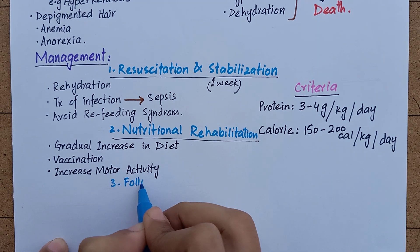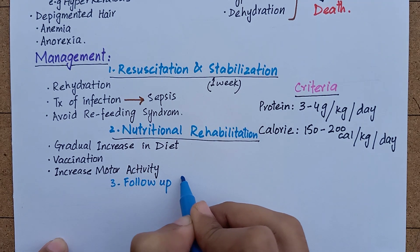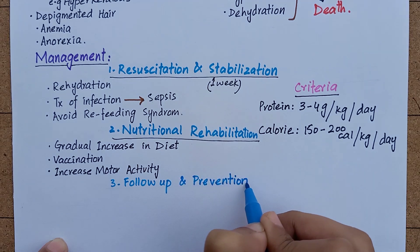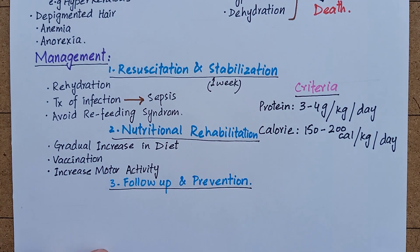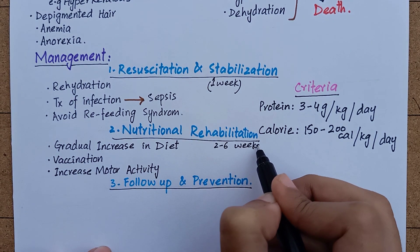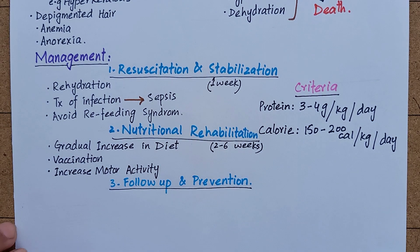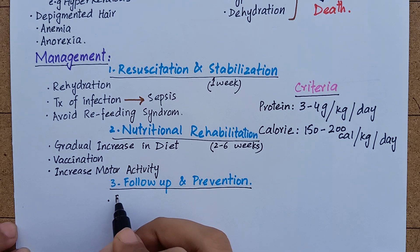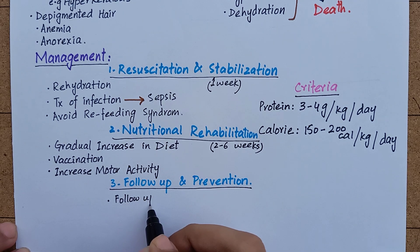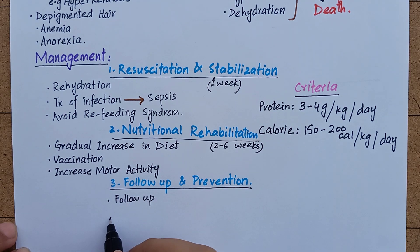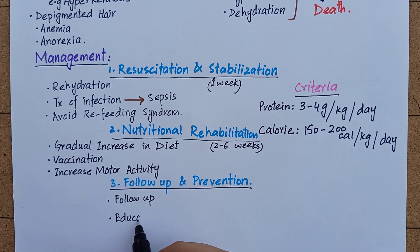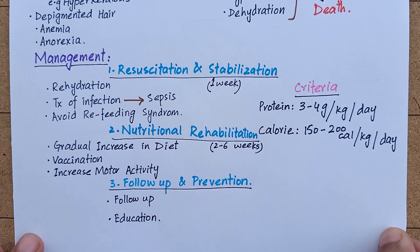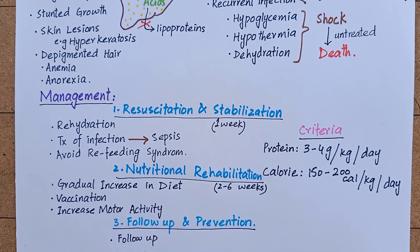Then comes the third phase, which is follow-up and prevention of recurrence. This phase usually lasts for two to six weeks. It is important to follow up with patients to reduce the risk of relapse. Family members, especially mothers, are educated regarding breastfeeding and supplemental feeding.